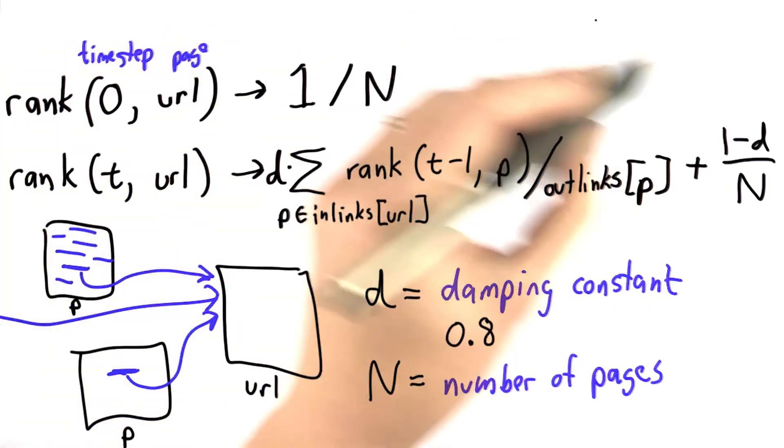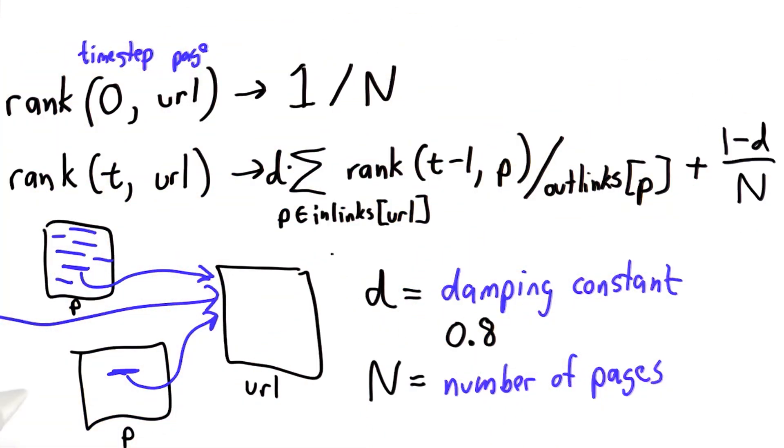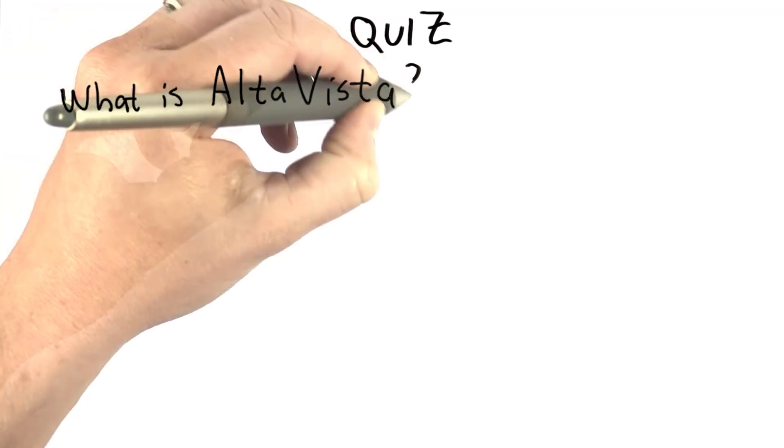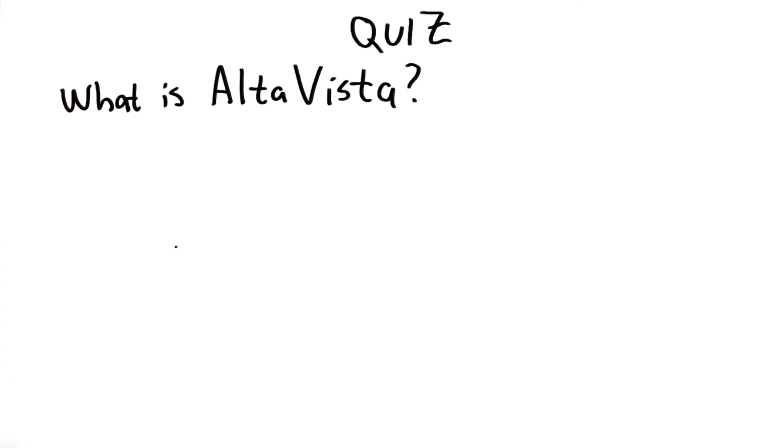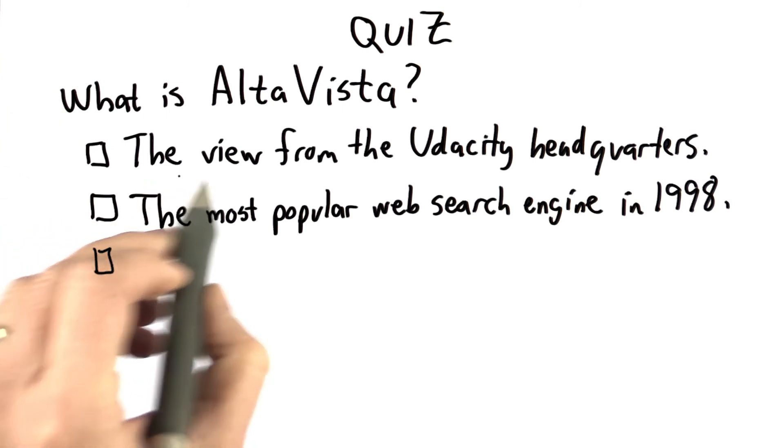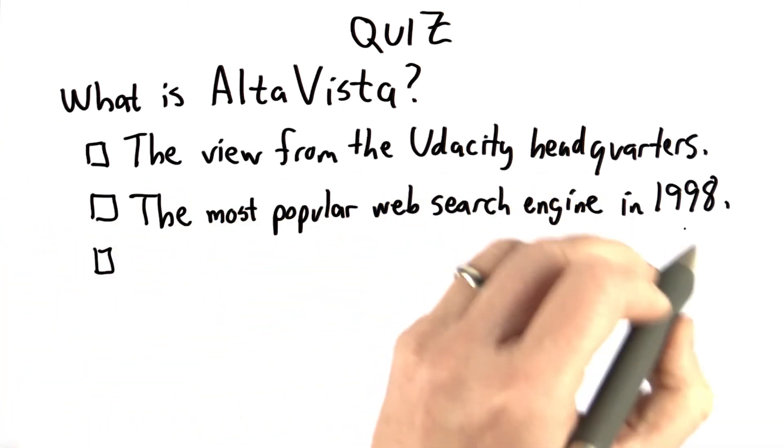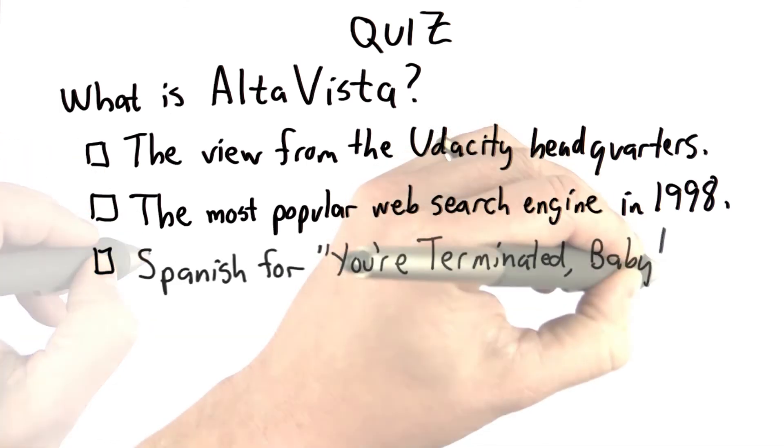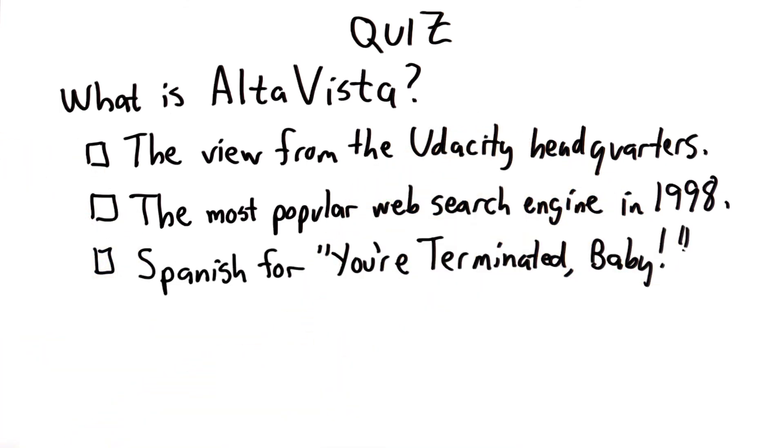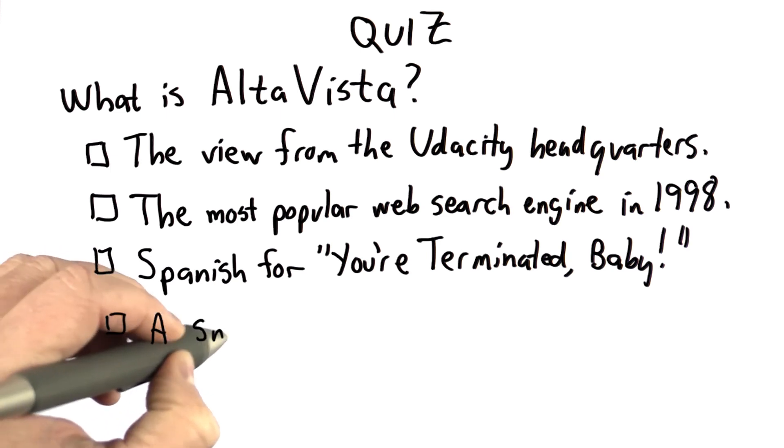Before we try to change our web search engine to actually program this, it's time for a little quiz. What is AltaVista? If you don't know this, feel free to use Google or DuckDuckGo to find out. The choices are: the view from the Udacity headquarters in Palo Alto, the most popular web search engine in 1998, Spanish for you're terminated baby, or a small town in Virginia.